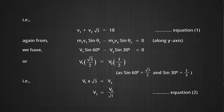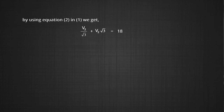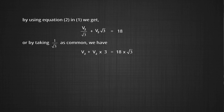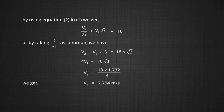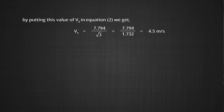Using Equation 2 in Equation 1: V2/√3 + V2·√3 = 18, so V2 + 3V2 = 18√3. Therefore 4V2 = 18 × 1.732, giving V2 = 7.794 m/s. Substituting V2 into Equation 2: V1 = 7.794/√3 = 7.794/1.732 = 4.5 m/s.